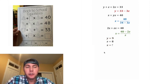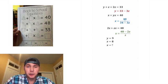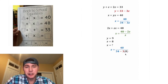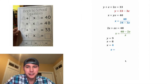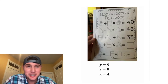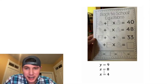We still need x. Using our equation x = 40 over (34 minus 3z) and plugging in z = 8: 3 times 8 is 24, and 34 minus 24 is 10. Then 40 divided by 10 is 4. So x equals 4.